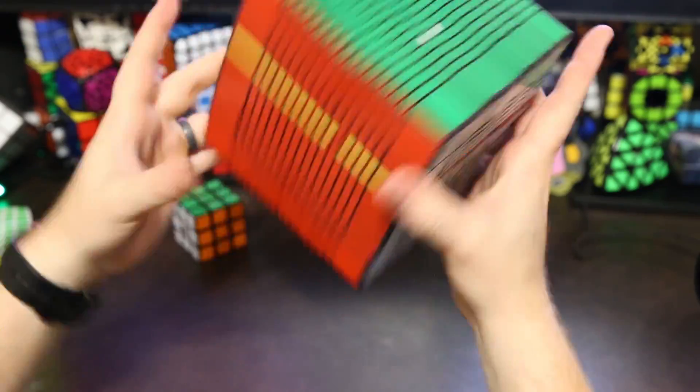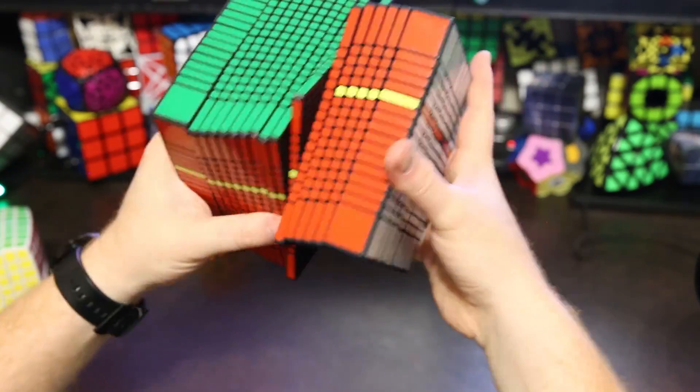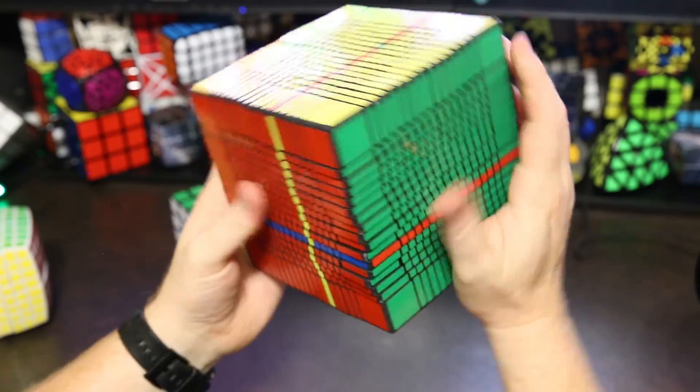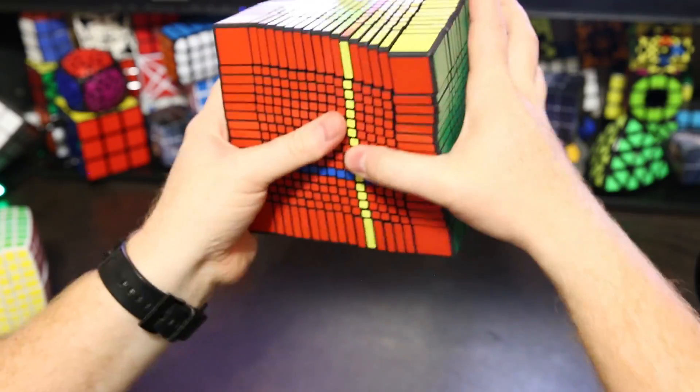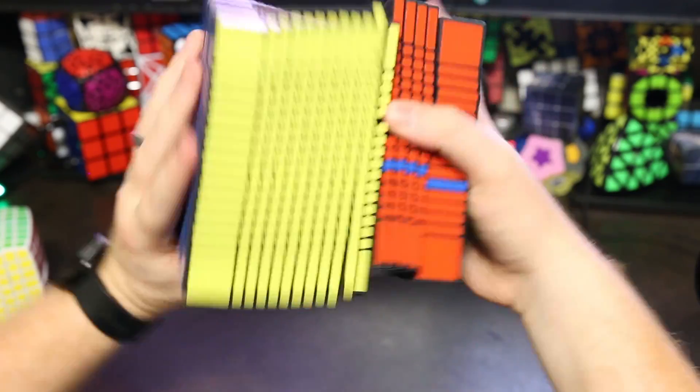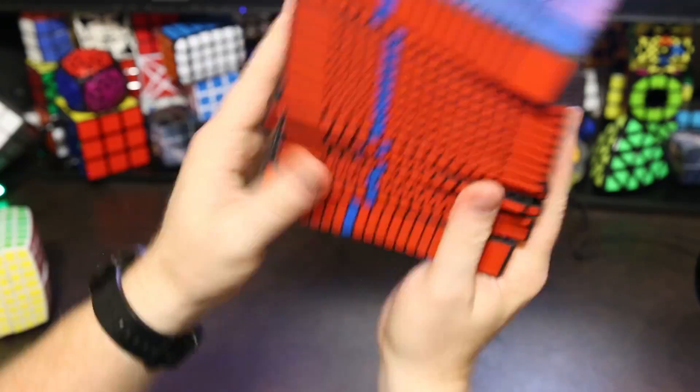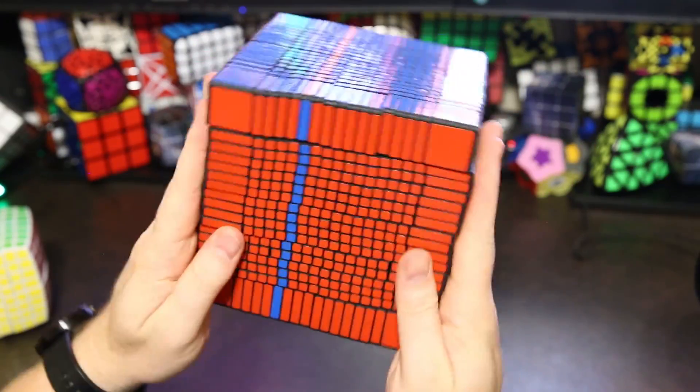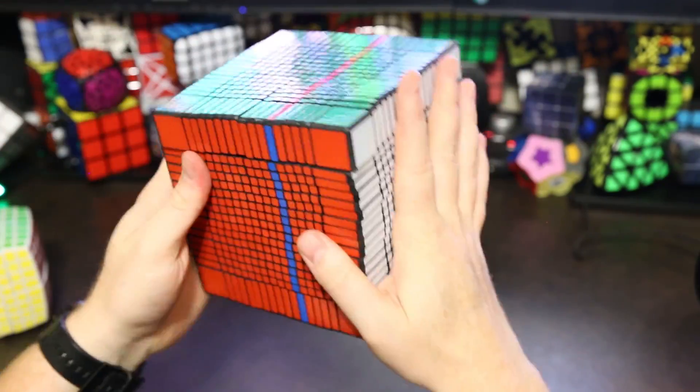A 17x17 though, on the other hand, it's hard to turn because you just can't grip the puzzle. And so it's hard to just isolate a single layer. But once you do, it actually turns a lot better than you might think. And so I'm actually quite impressed with it.